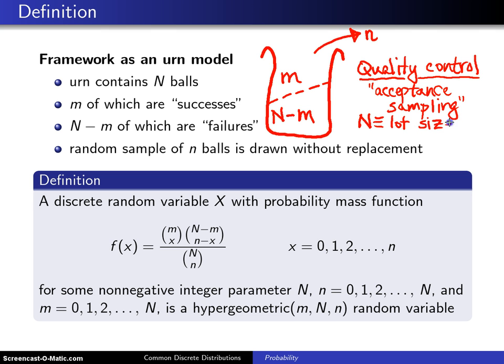And in acceptance sampling, what you have is you have a lot size N. That's the number of items that perhaps are being delivered to a consumer. And the consumer wants to test those items, but can't test all capital N of them. It would just take too long. So the consumer decides to take a sample size of little n. And from the results of the sample size of little n, they will either accept the lot or reject the lot. And so that's an industrial application known as quality control.